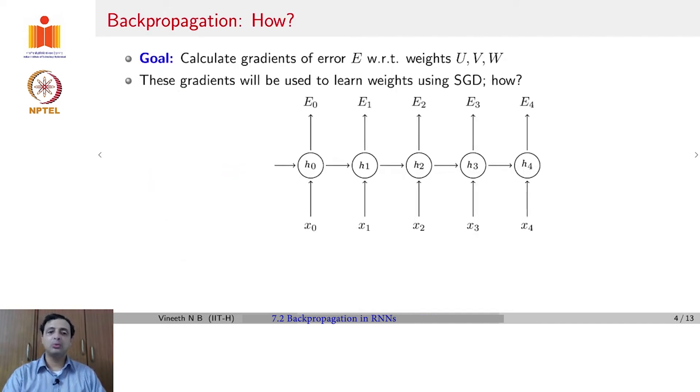Now, if we want to compute the gradients of error E with respect to the three sets of weights that we have here, u, v and w. Let us assume that these gradients are going to be used to update the weights using stochastic gradient descent exactly the same way we did this for feed forward neural networks or CNNs. And it is also important to keep in mind that depending on the kind of RNN variant that you are using, you could have an error in each time step.